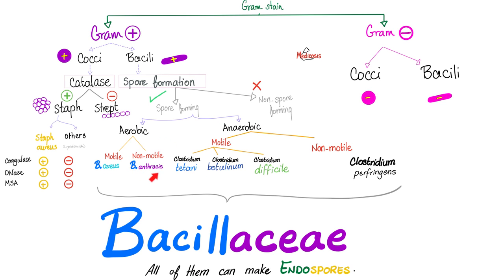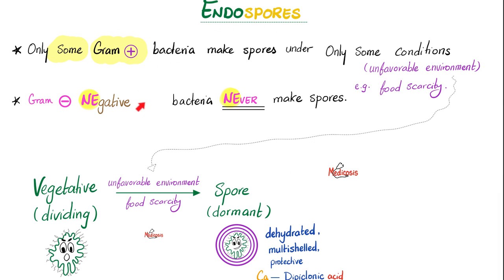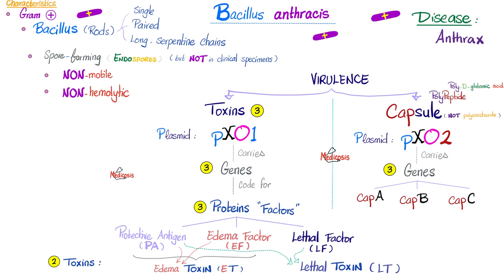Bacillus anthracis is a gram-positive bacillus that is spore-forming, aerobic, and non-motile. It can appear single, paired, or in long serpentine chains. They make spores, are non-motile, and non-hemolytic.